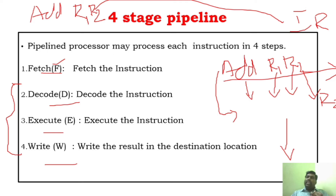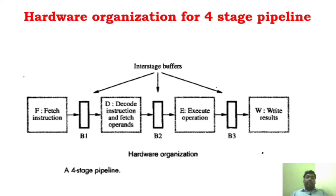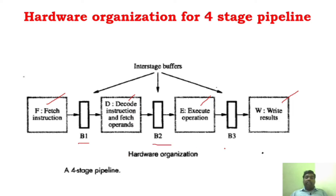So, you understand what is fetch, decode, execute, and write. For these four stages, you need four hardware components: a fetch unit, a decode unit, an execution unit, and a writing unit. Fetch instruction, decode instruction, execute operation, and write results. And in order to interconnect all these stages and all these hardware units, you need buffers — buffer 1, buffer 2, and buffer 3.